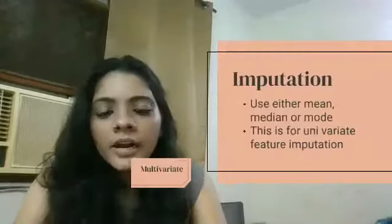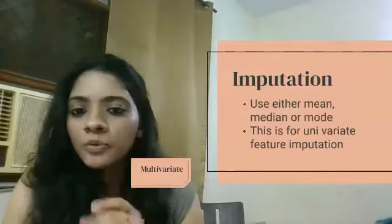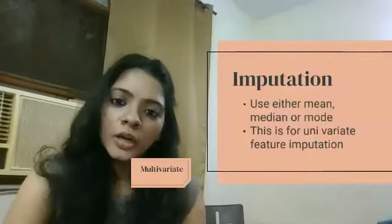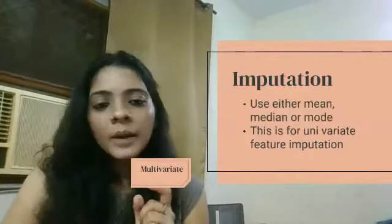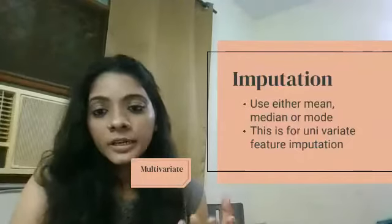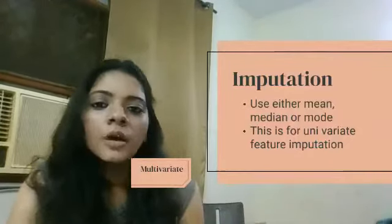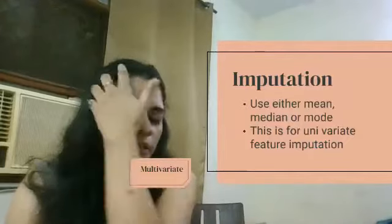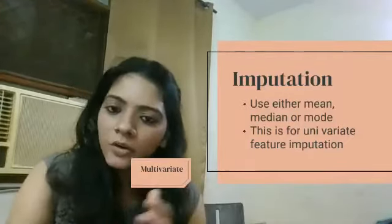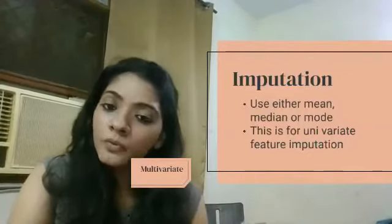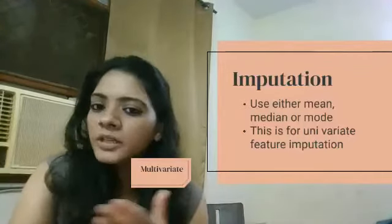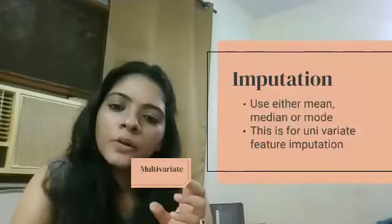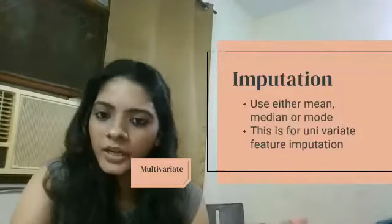Imputation is either single imputation or multivariate imputation. Single imputation is quite easy — you replace the values either with mean, median, or mode. Mean and median are used for numeric data, and mode is used for categorical data. For example, categorical data like gender — if most of your dataset has females, you replace the null values with 'female'. Mode means replacing with the highest frequency occurrence, while mean and median are used for numeric datasets.